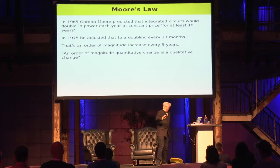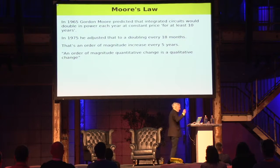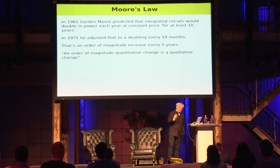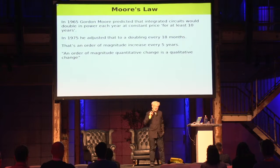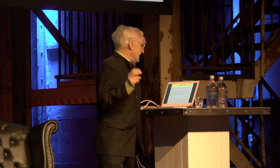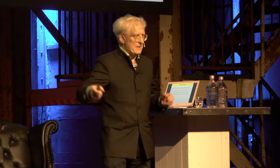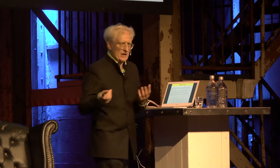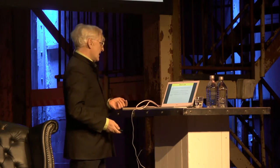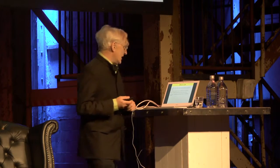The important exponential growth for us is Moore's Law. In 1965, Gordon Moore predicted that the number of elements on an integrated circuit would double at the same price for at least 10 years — every year. In 1975, ten years after that prediction, he adjusted it and said it's going to happen every 18 months. That's an order of magnitude increase every five years, which is a big change.